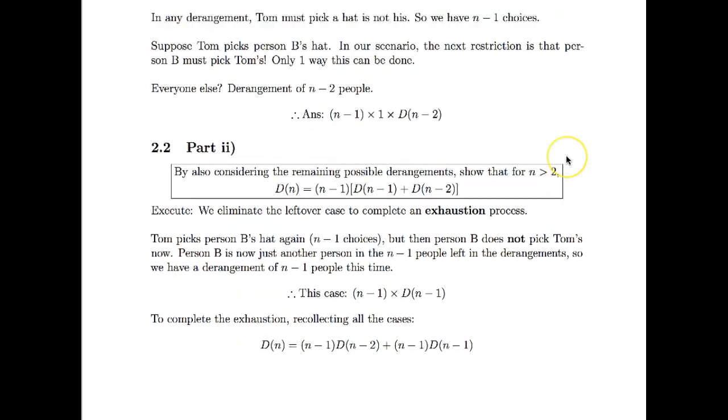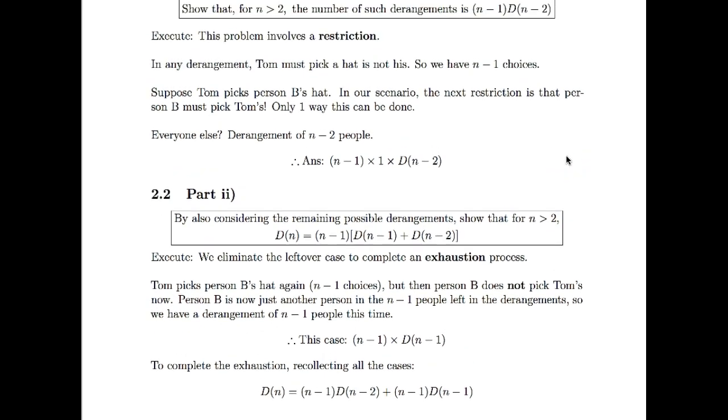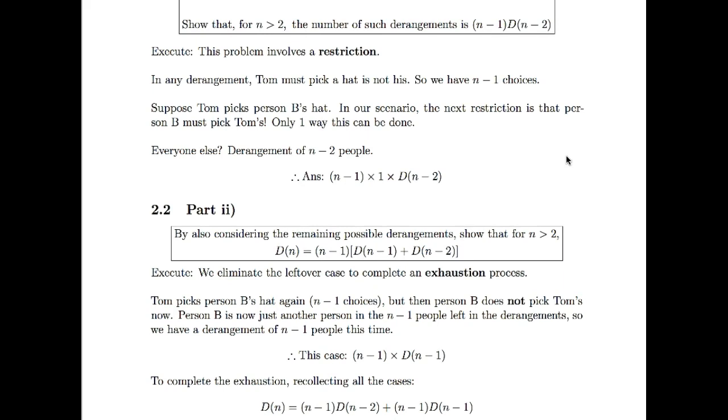Okay, moving on. And now they want you to consider all of the remaining possible derangements. So this is now an exhaustion process. We've got to consider the other possibility. And therefore, they want you to basically realize that this is going to be a recursion formula for the number of derangements given n people. Okay, that came out really terribly, but don't worry about that. So we'll just go to the other case. Here we assume that person B picks up Tom's hat as well. Now we're going to start the same way, n minus one cases, but then person B will not pick up Tom's hat anymore, and that's going to change things a little.